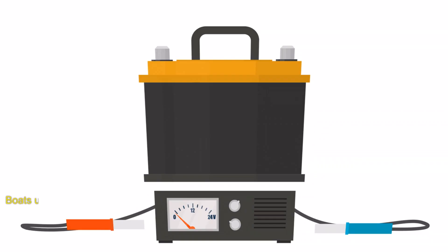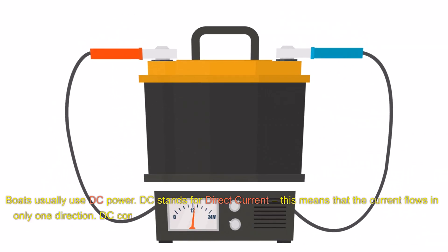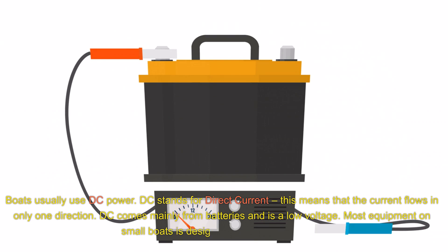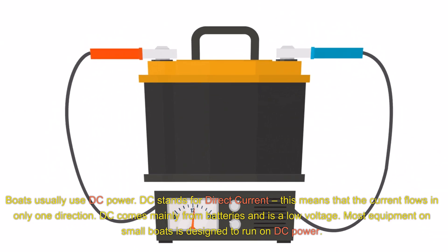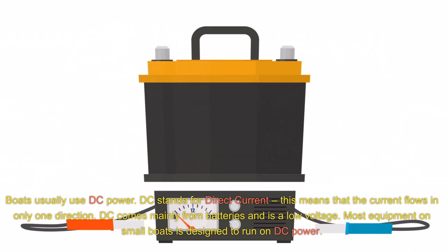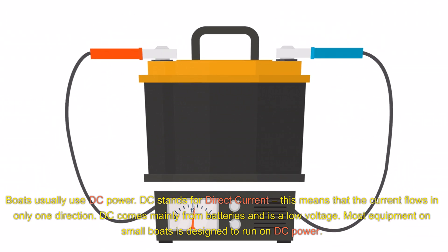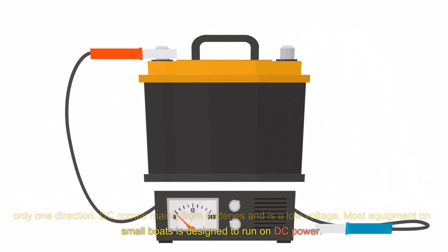AC/DC. Boats usually use DC power. DC stands for direct current. This means that the current flows in only one direction. DC comes mainly from batteries and is a low voltage. Most equipment on small boats is designed to run on DC power.